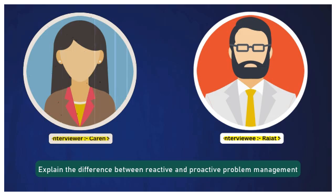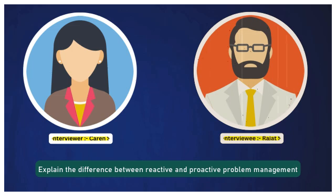Explain the difference between reactive and proactive problem management. Reactive problem management focuses on resolving issues after they occur, while proactive problem management involves identifying potential problems and preventing them before they happen. In proactive management, we use techniques like trend analysis and root cause analysis to anticipate and mitigate risks. It is not an easy task — we have to deep dive into all possible cases — but the result is very beneficial for the organization because we are stopping potential service disruptions before they happen.